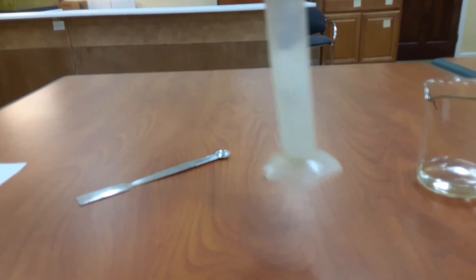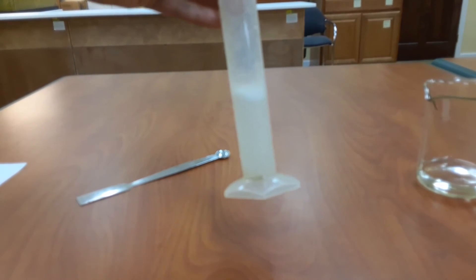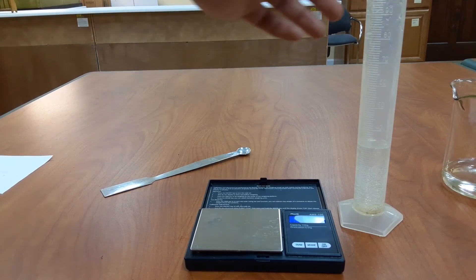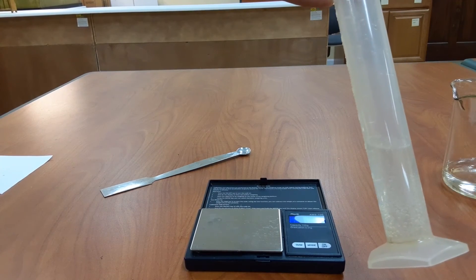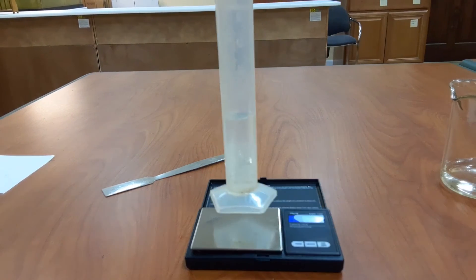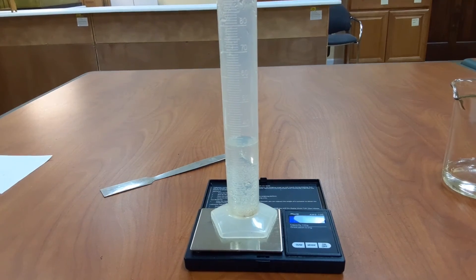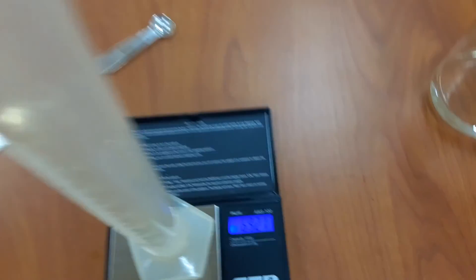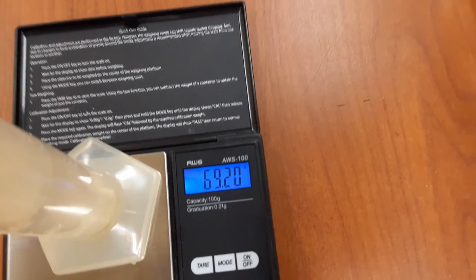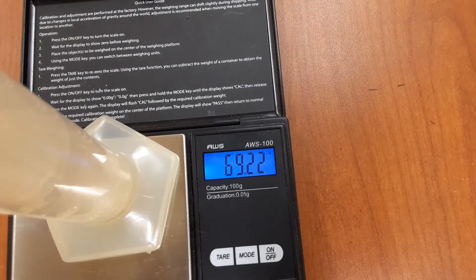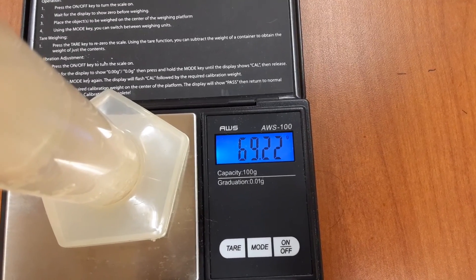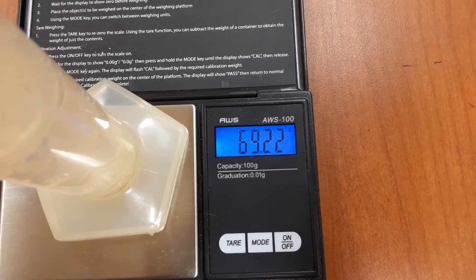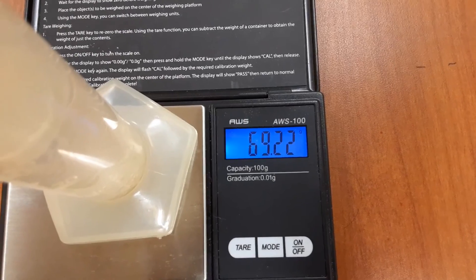In the graduated cylinder, the reaction is now complete. There's no more effervescence, so I can now find the mass of the graduated cylinder with the vinegar and the baking soda, and the mass is 69.22 grams. This is m_final.